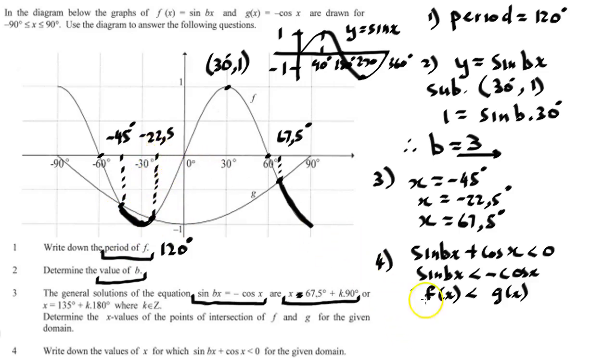Now we can write our solution down. For the first part of our solution, it'll be x will be greater than -45 degrees and less than -22.5 degrees. Or, we'll get x which is going to be greater than 67.5 degrees and less than equal to 90 degrees. The reason it's less than equal to 90 degrees is because at 90 degrees, your graph of f is less than the graph of g.